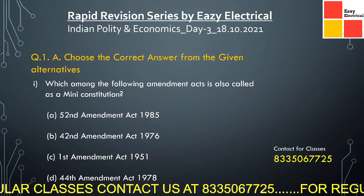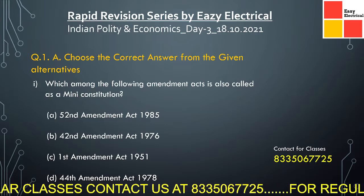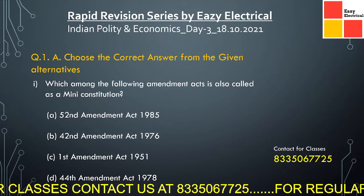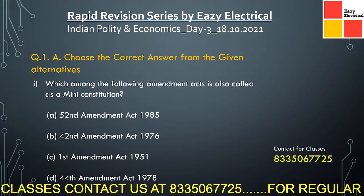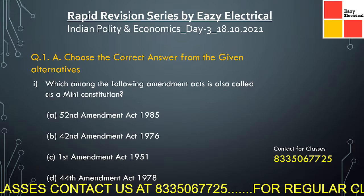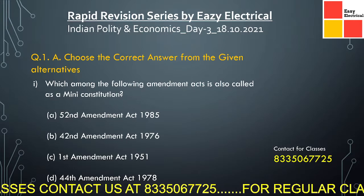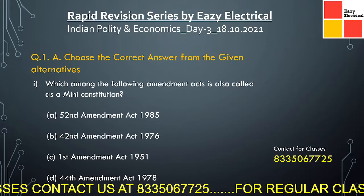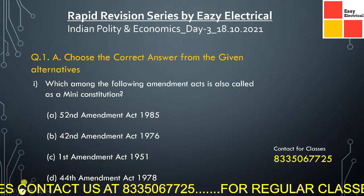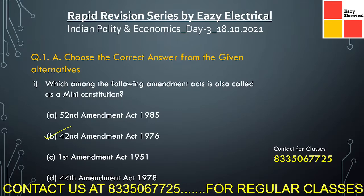The first question is: which among the following amendment acts is also known as a mini constitution? The options are 52nd amendment, 42nd amendment, 1st amendment, 44th amendment. Here the correct answer is option B, that is the 42nd amendment.